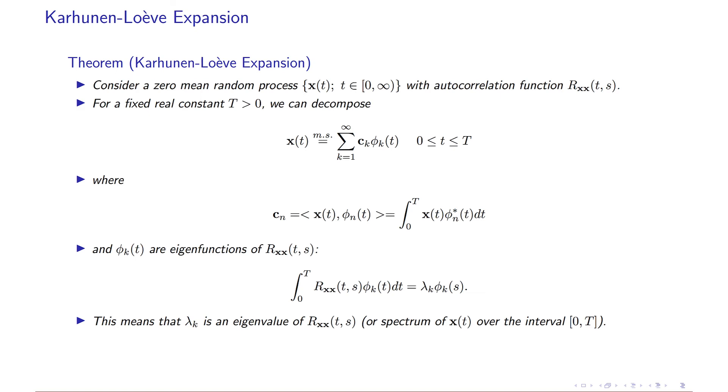So this means that lambda k is an eigenvalue of this one, and lambda k is the energy of your signal. But this lambda k also is related to c k, so it's the energy of your k-th component.